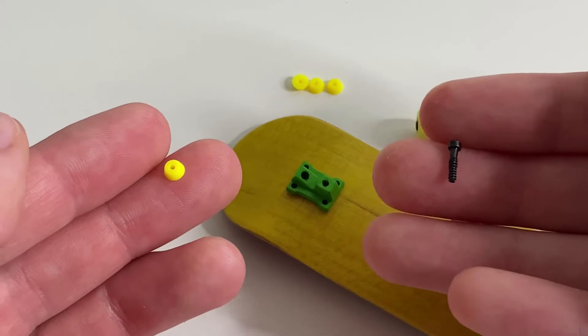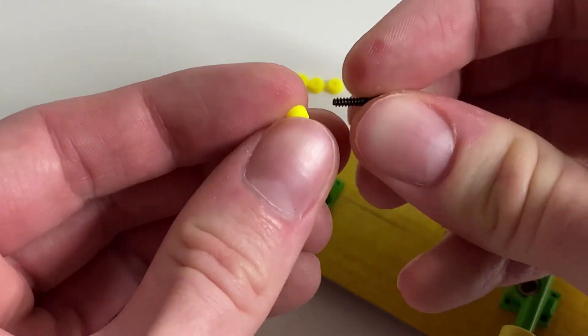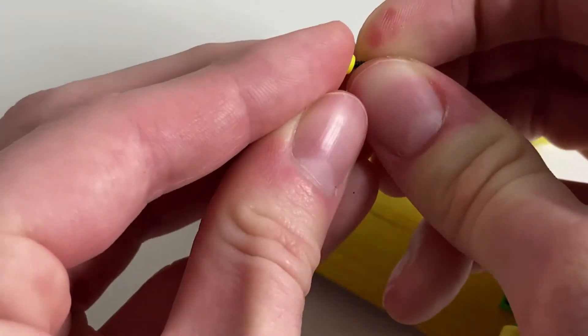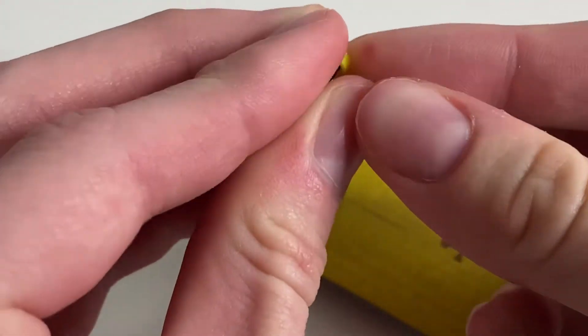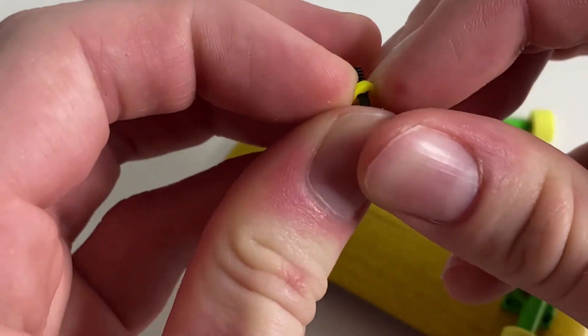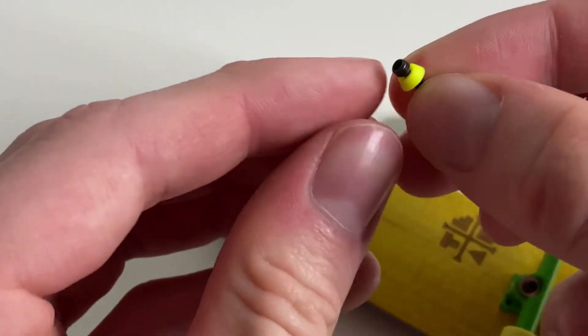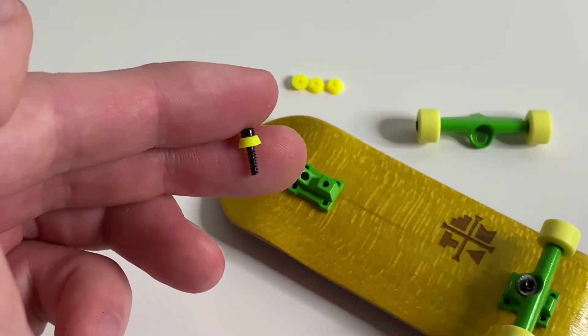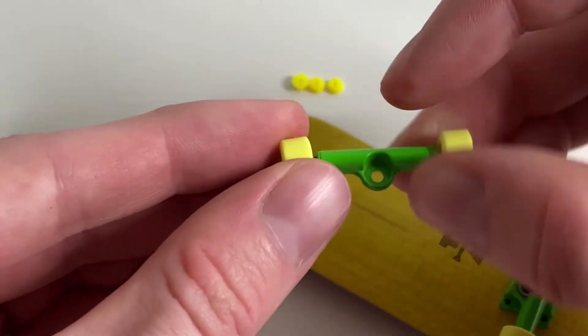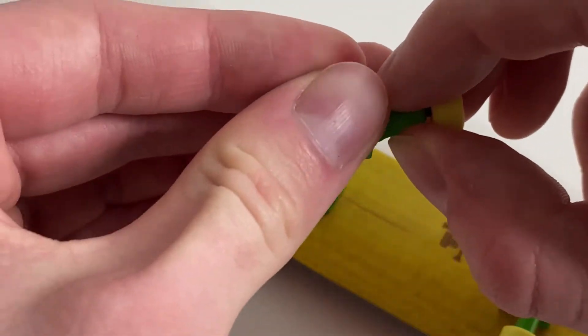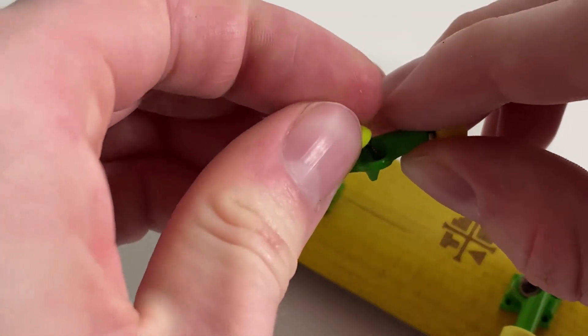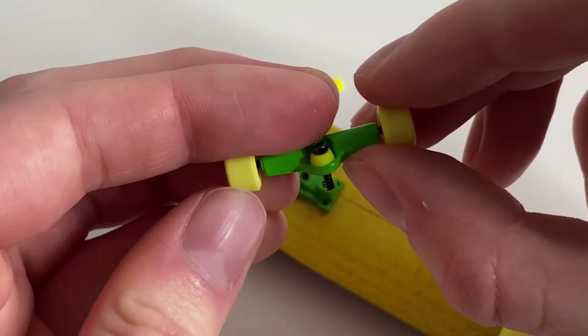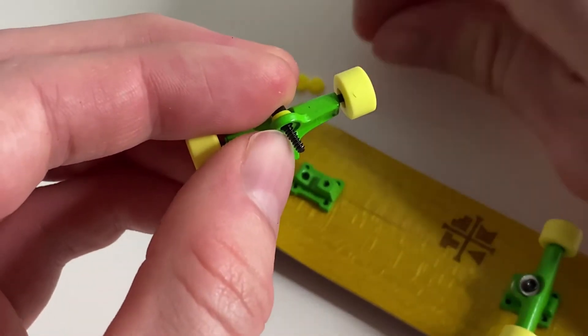Next, you're going to take your fingerboard bushing and a kingpin, and you're going to put the bushing onto the kingpin. Once that is done, you're going to put the kingpin into the hanger, and then you're going to put the bottom bushing onto the kingpin.